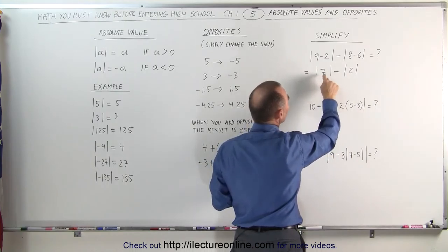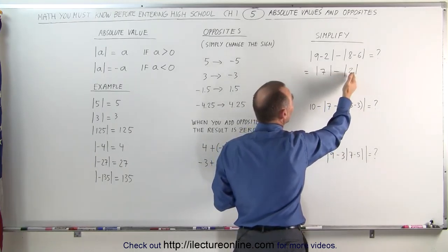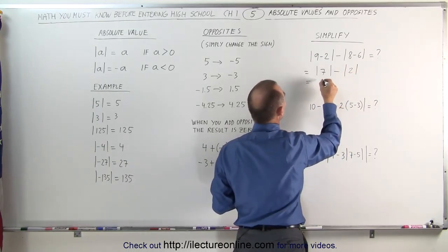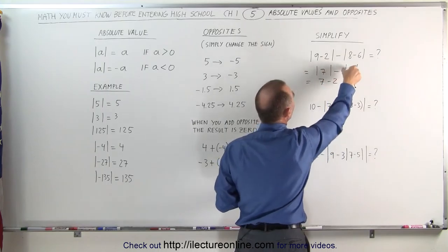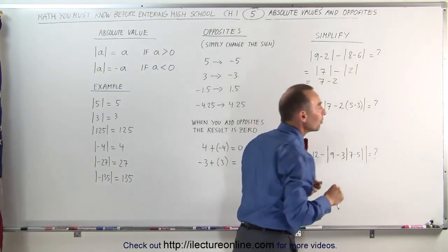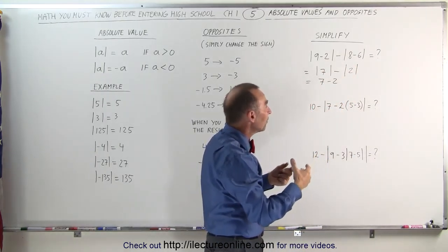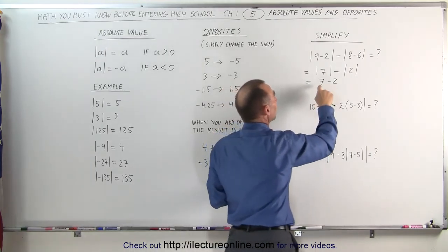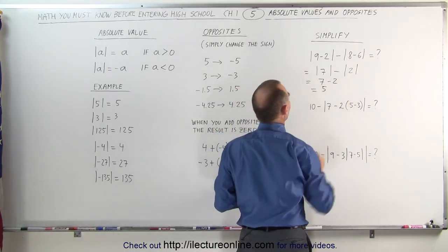Now you take the absolute value symbols away. If it's a negative 7, you turn it to a positive 7. If it's a positive 7, it remains a positive 7. Same with the number 2, which means this can be written as 7 minus 2. You simply remove the absolute value symbols, and if it's a negative sign, you make it into a positive; if it's positive, you leave it alone. So here we have 7 minus 2, which is equal to 5.